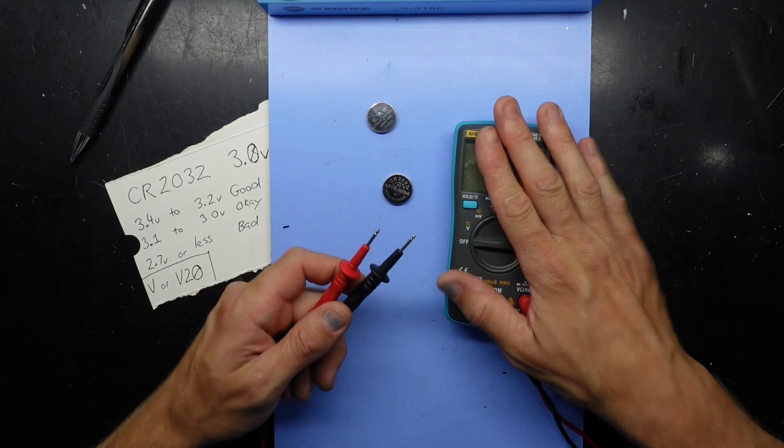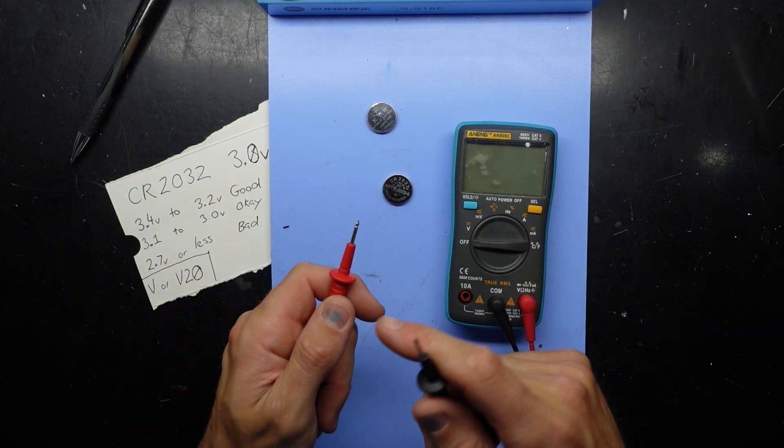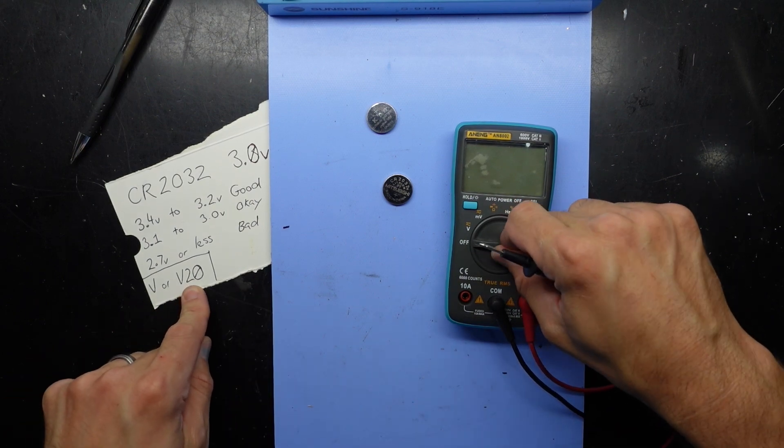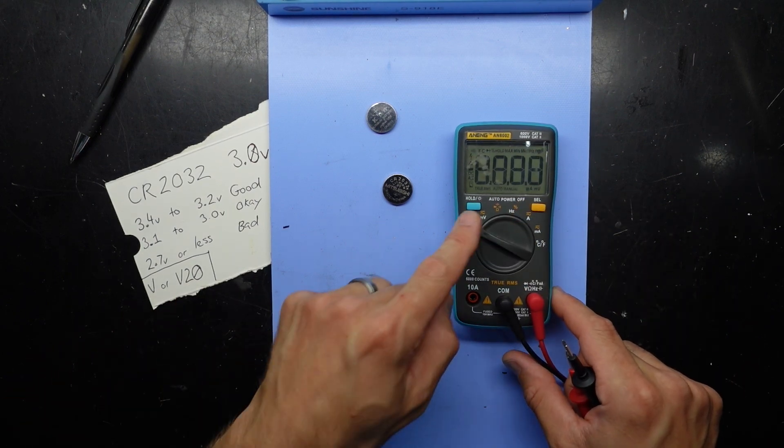Now how do we test these? We have a multimeter with two pins, red positive and black negative. We want to turn it to volt or V20 depending on your multimeter and we should get a screen like this.